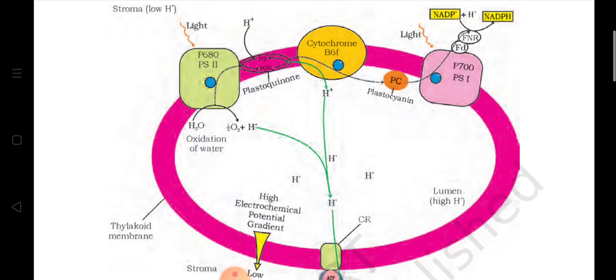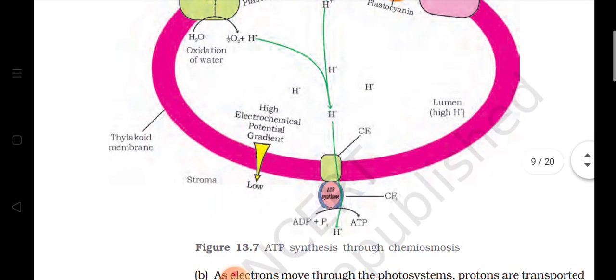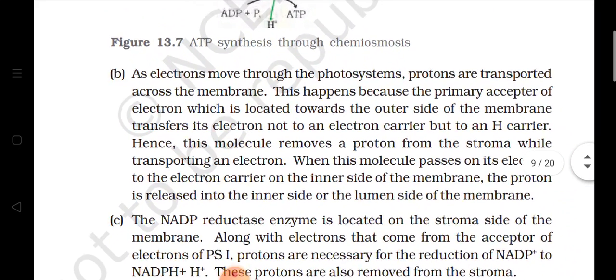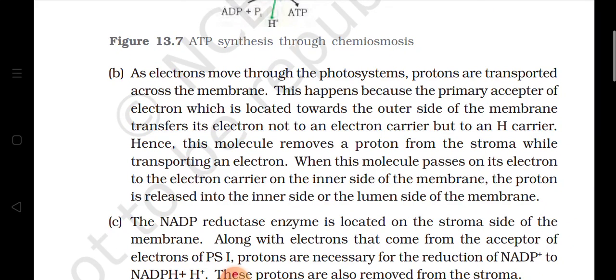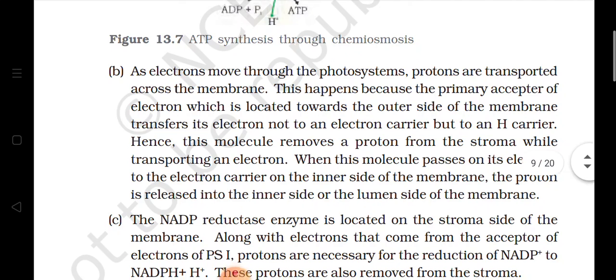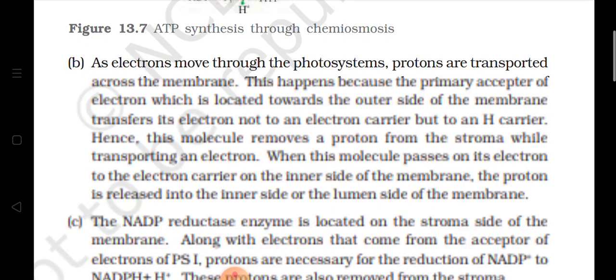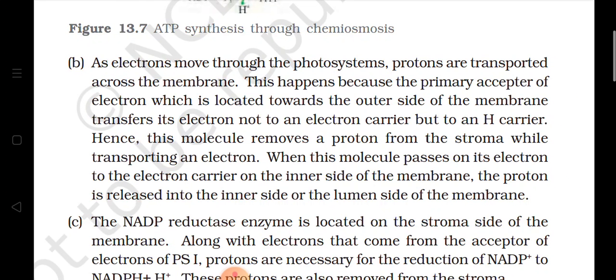Now jo electrons collect ho gaye hain, they will move through the photosystems — jaisa ki humne padha, Photosystem I and Photosystem II, PS1 and PS2. Ab PS2 se start hota hai: light fall hoti hai, electrons excited ho jaate hain. Aur jaisi hi electrons move karenge, protons jo hain they will be transported across the membrane — jo andar thay protons woh ab bahar aa jayenge. And this happens because the primary acceptor of the electron is located towards the outer side of the membrane. Kyunki jo primary acceptors hain electron ke, humne padha ki primary acceptor of electron do hain, aur yeh dono jo acceptors of electron hain, yeh membrane ke outside mein present hain.